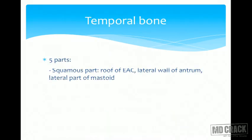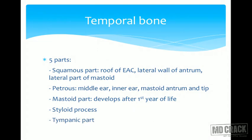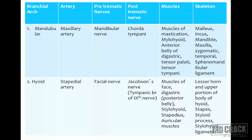The temporal bone has five parts: squamous part, petrous part, mastoid part, styloid process, and tympanic part. The squamous part forms the roof of the external auditory canal, the lateral wall of the attic, and the lateral part of the mastoid. The petrous part forms the whole of the middle and inner ear. The mastoid part develops after the first year of life, so mastoid air cells are not visible on X-ray in a neonate.